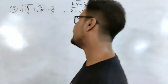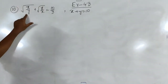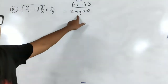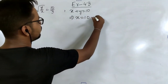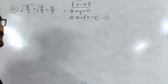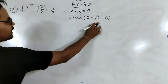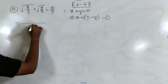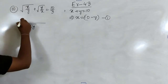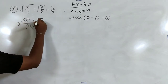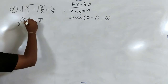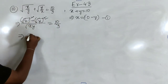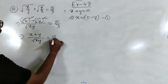Moving to the next type: we have root(x/y) plus root(y/x) equal to 10/3, and x plus y equal to 10. We start with the linear equation: x equal to 10 minus y, as equation 1. For the other equation, taking LCM as root(xy), the numerator becomes root(x²) plus root(y²), giving x plus y by root(xy) equal to 10/3.